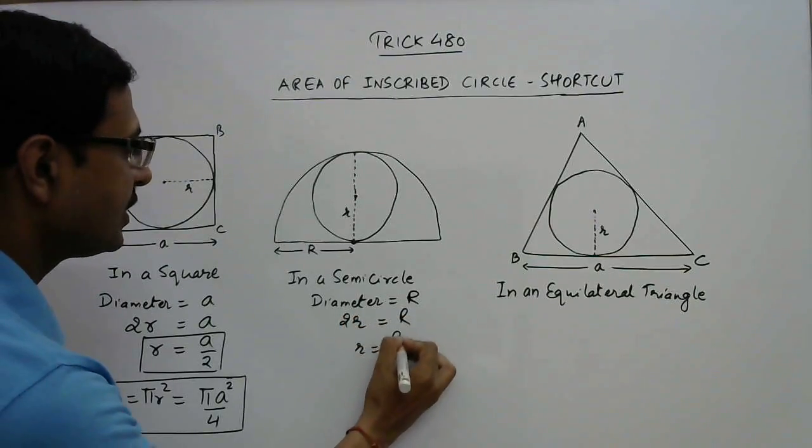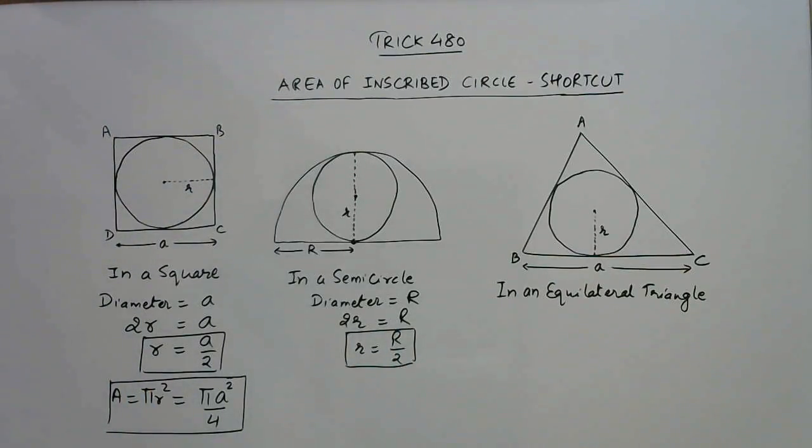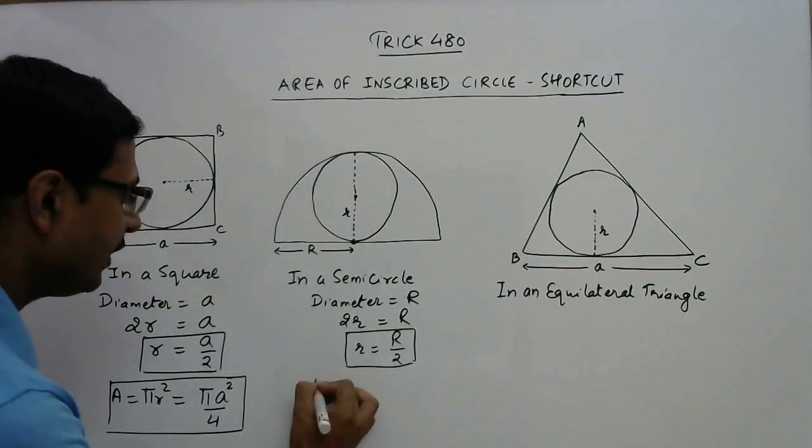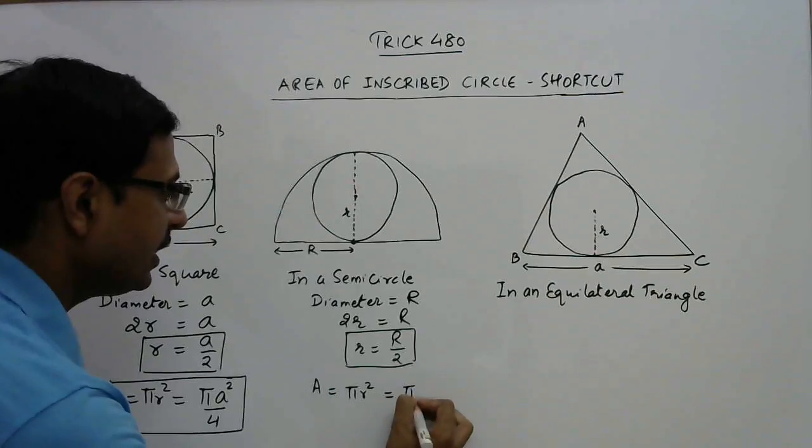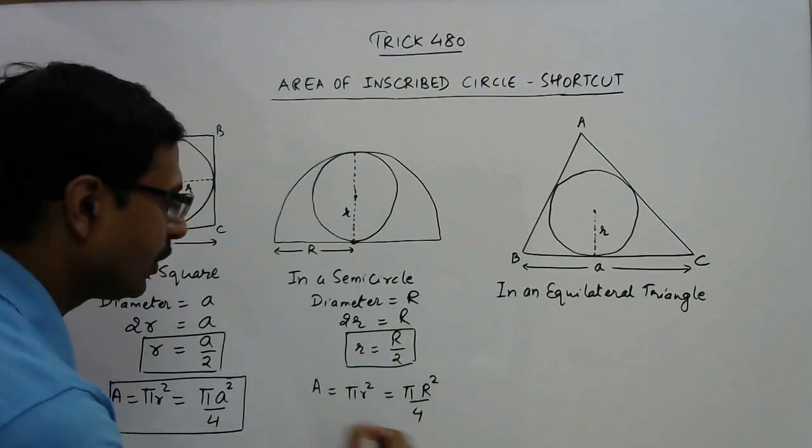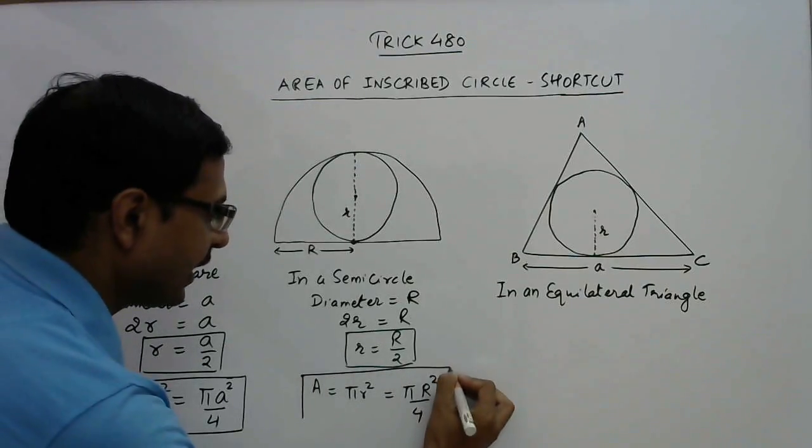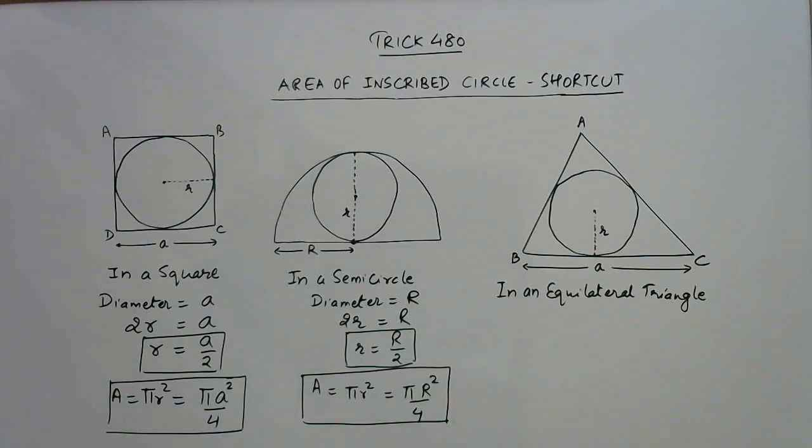Diameter means double radius, so the radius of the circle is half of the radius of the semicircle in which it is inscribed. Now again, as in the first one, we can find the area. Area will come out to be π into r², so that is π into square of this, so R² upon 4, which is a direct formula for calculating the area of the inscribed circle.